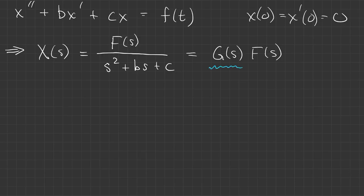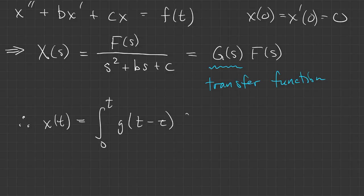That means when we inverse transform, go back to time, x is a convolution between little g and f. As always, little g is the inverse transform of big G, and that's what we call the impulse response.